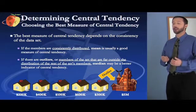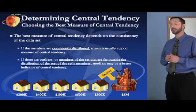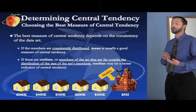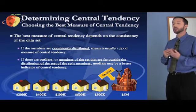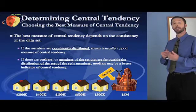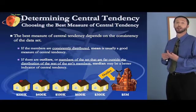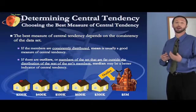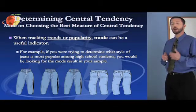If we have outliers, median is usually a better measure of central tendency than mean. If data is fairly consistently distributed, like in our previous examples with the houses, mean would probably be a good representation. But in this example, we have one house that's $5 million in the neighborhood. If we calculated the mean, it would be very high compared to what most houses cost, because this $5 million outlier would be skewing our data. But if we took the median, we would still get a value that is fairly representative, because median does not get skewed by outliers. When you're tracking trends or popularity, mode can be a useful indicator.